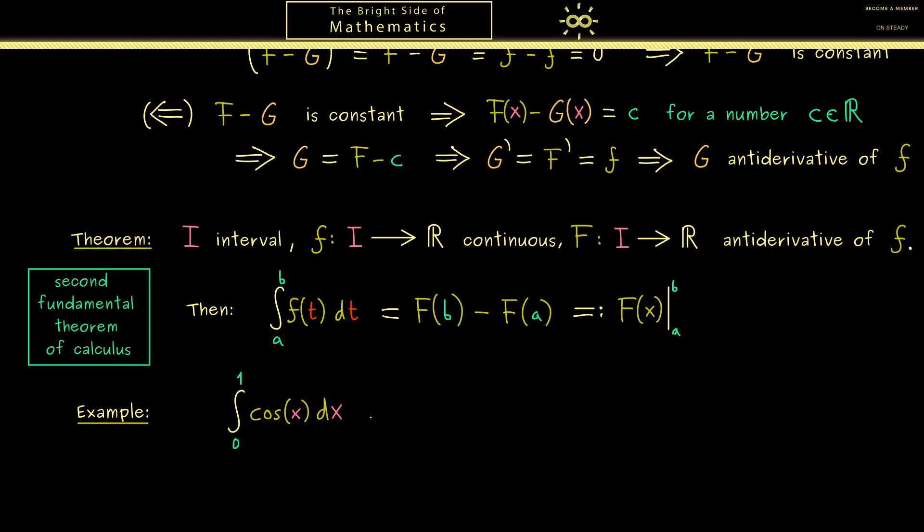Now the fundamental theorem of calculus tells us just use an antiderivative. And of course we know if we form the derivative of sine of x, we get the cosine of x. Therefore this is an antiderivative we can use.